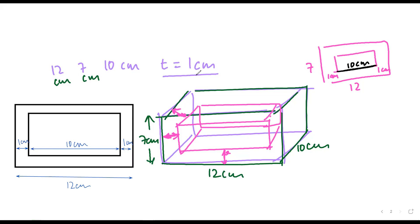Similarly, if you look at the height — the external height is 7 centimeter. But the internal height: can you tell me what will be the internal height? It will be 7 minus 2, so 5 centimeter.